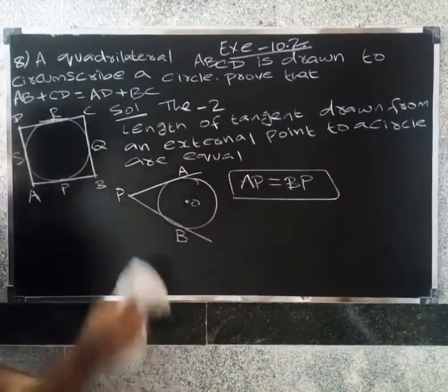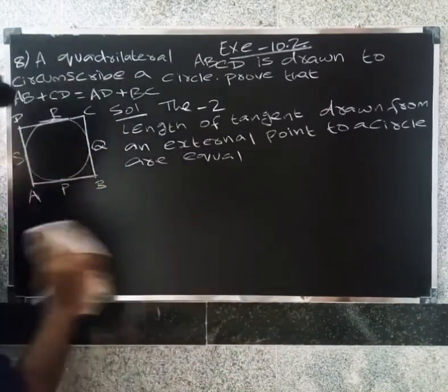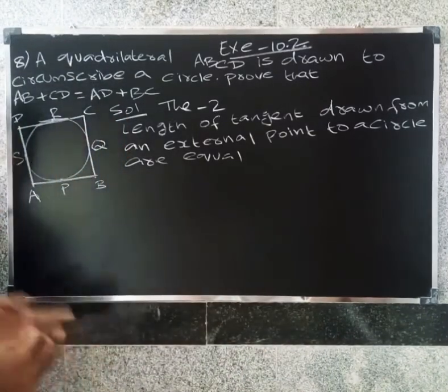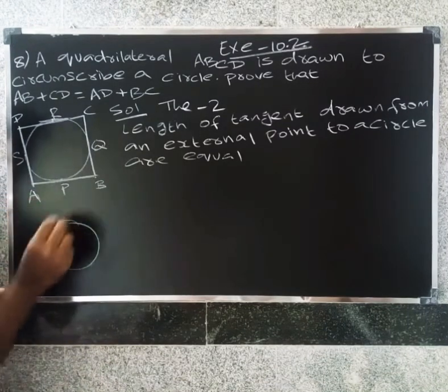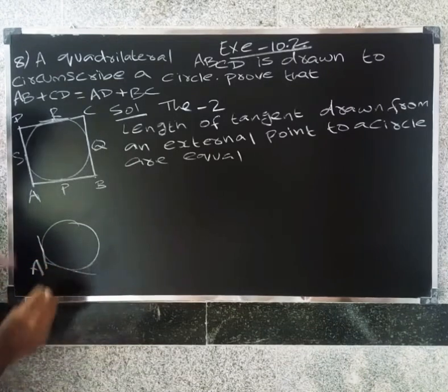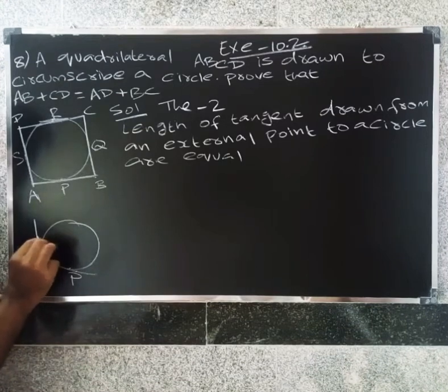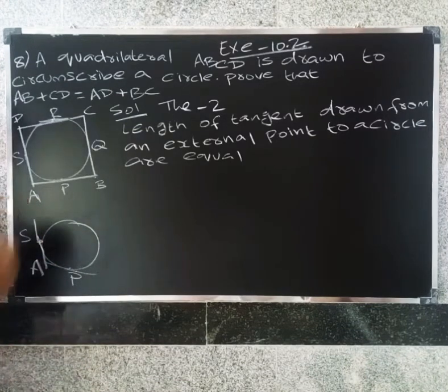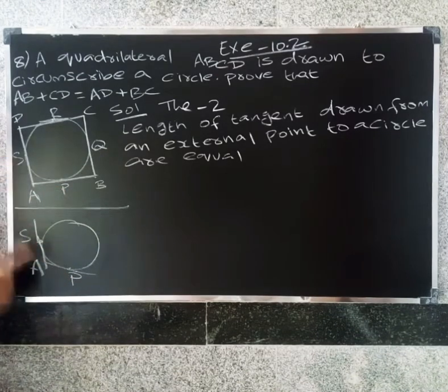Now let's draw the diagram. In the diagram, we have points P, Q, R, and S on the circle where the sides of the quadrilateral touch the circle.